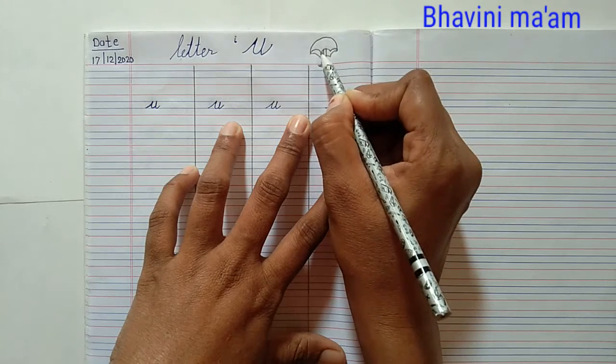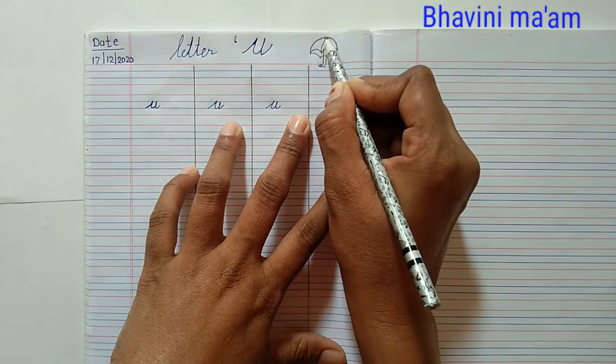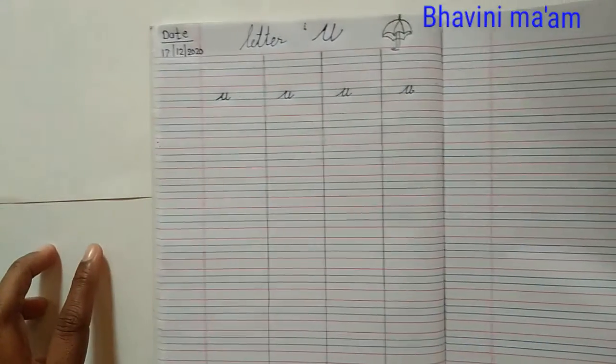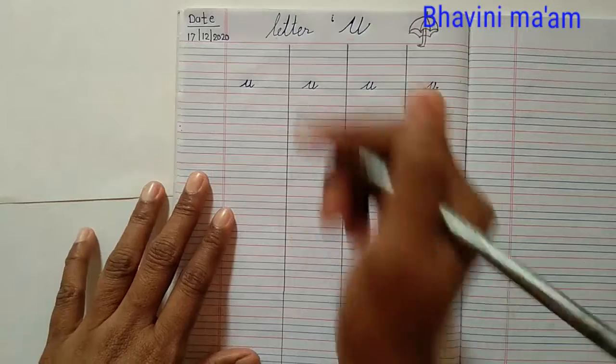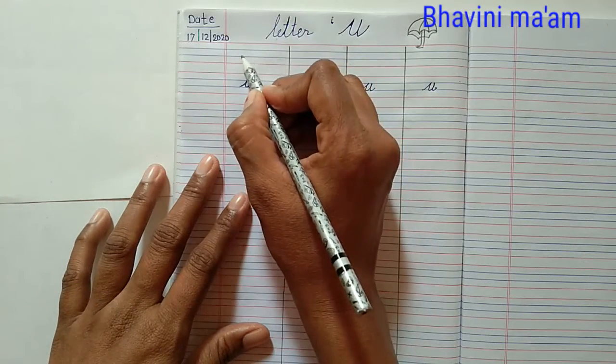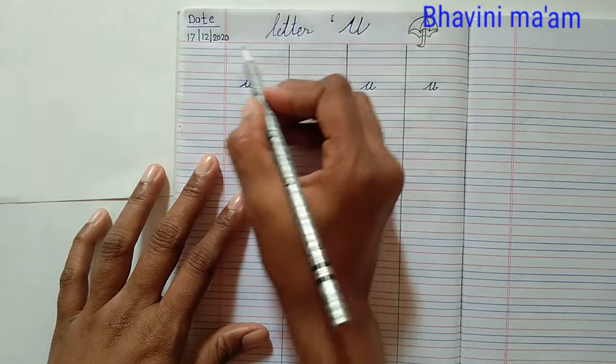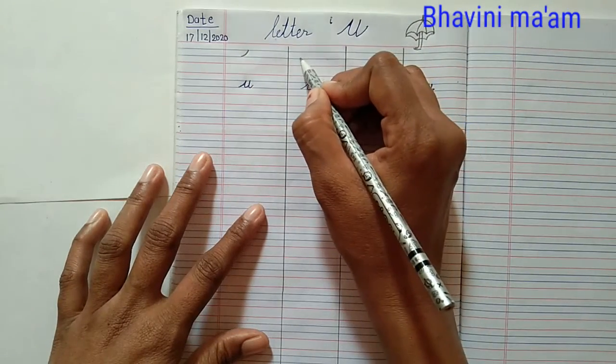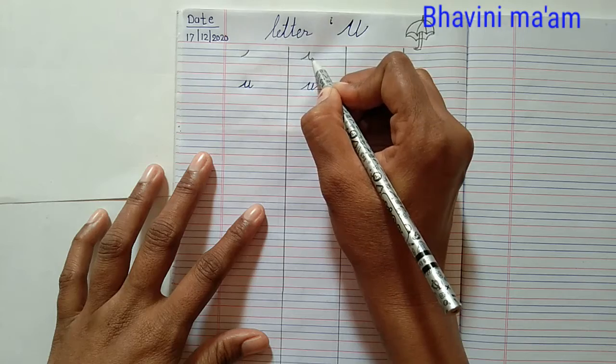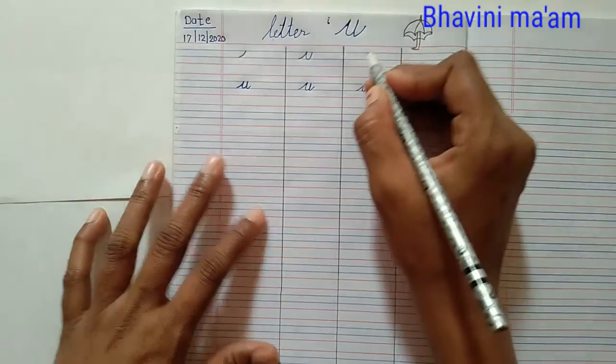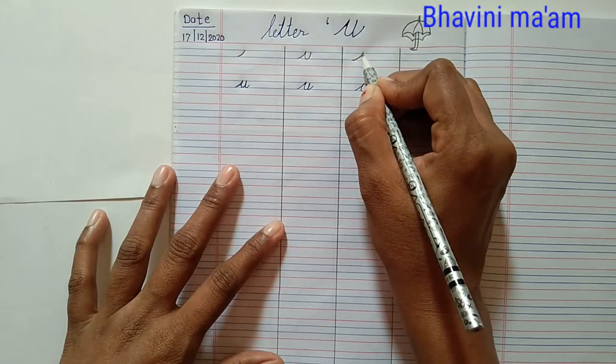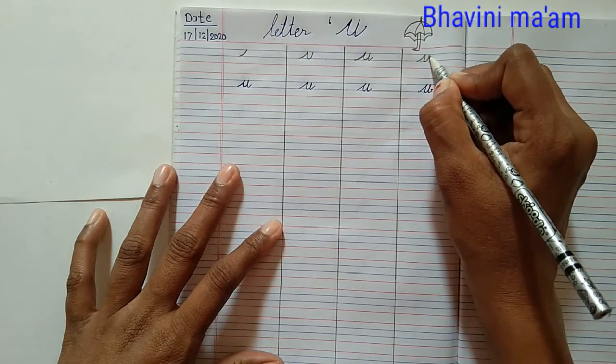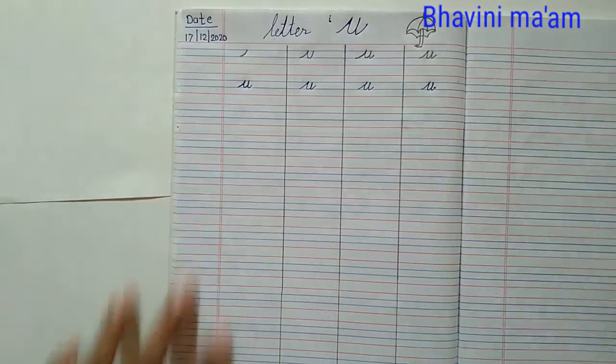Simple umbrella. Now first step is start from the second blue line. This line. U for Umbrella.